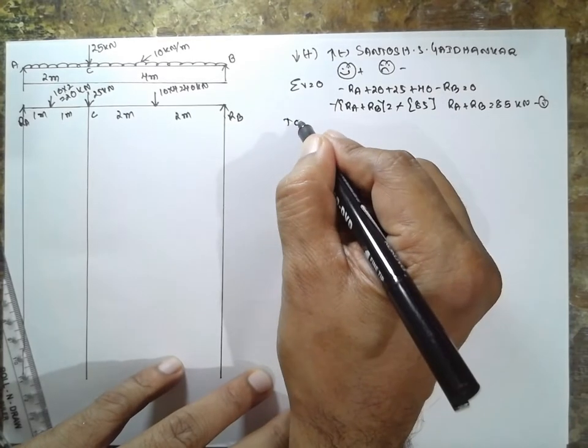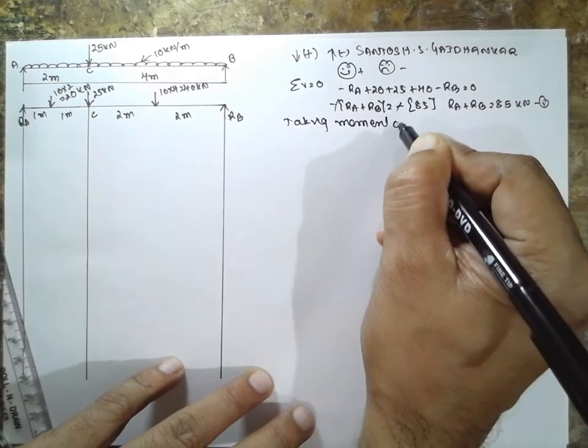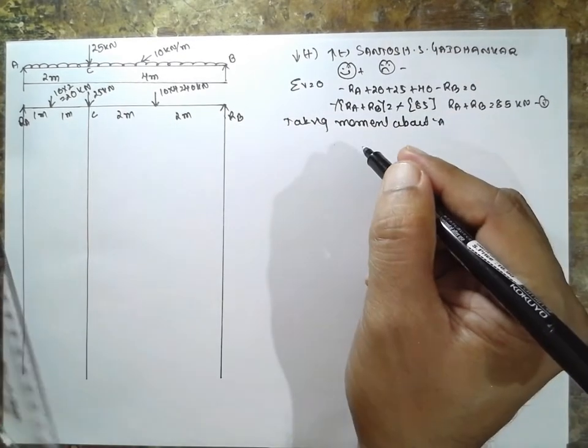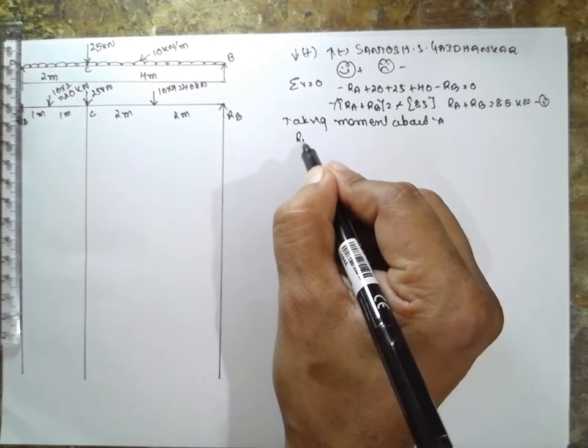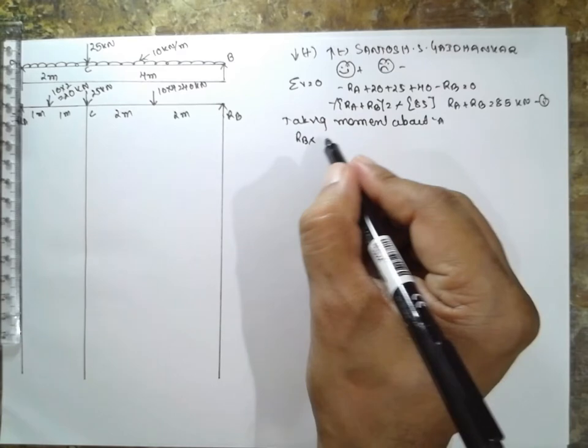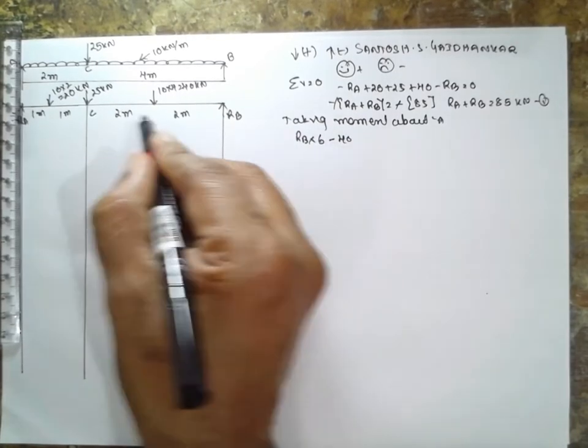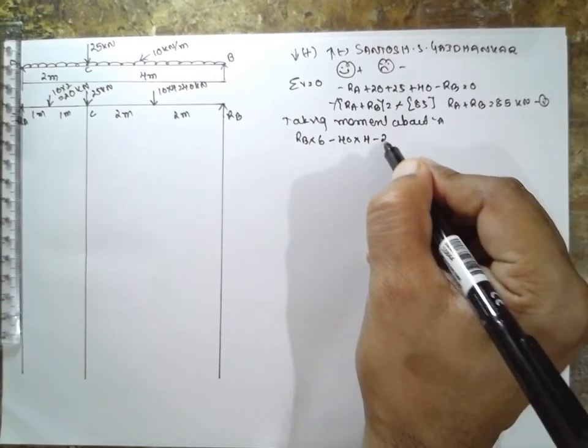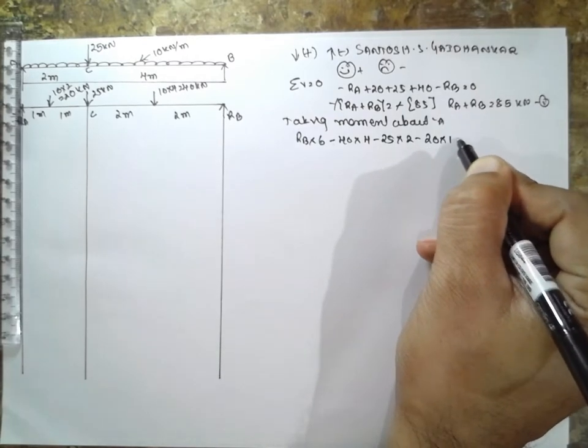Now taking the moment about A. This end has to be fixed here, anticlockwise becomes positive. RB into total distance 6 minus 40 into 4 minus 25 into 2 minus 20 into 1 is equal to 0.